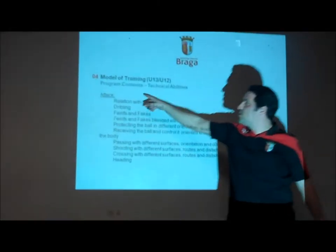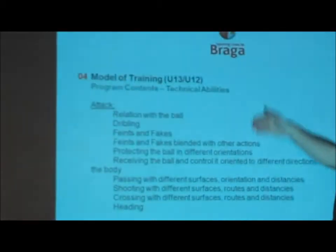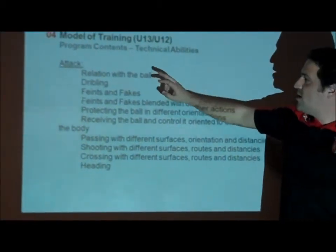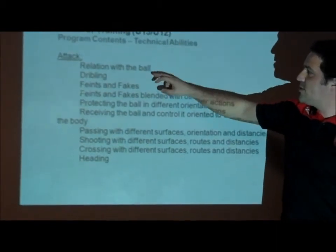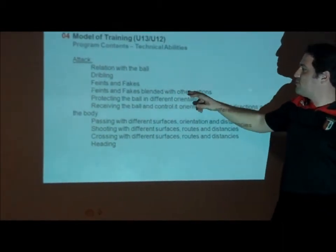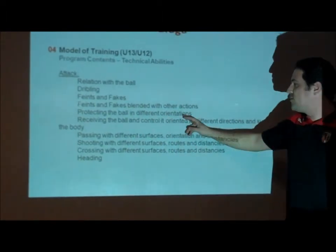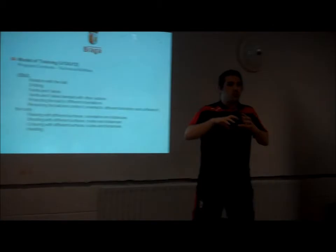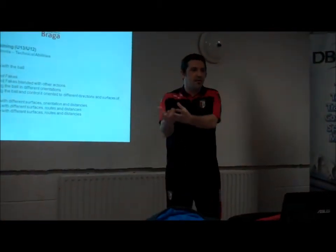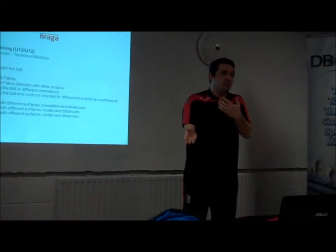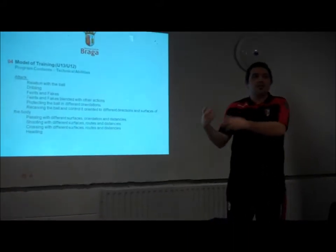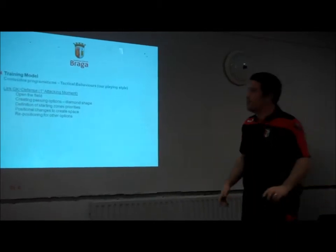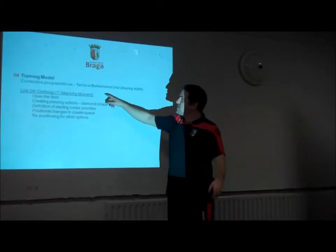So this is our document — this is a page from the document. In the top relation with the ball, that's a priority: the dribbling, fakes and fakes blended with other actions, protecting the ball in different orientations. So these are the priorities, but then we create situations for these things to happen. If they don't happen, I'm not saying you have to do it — I'm just creating situations for it to happen.